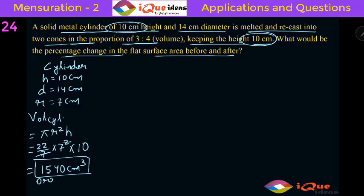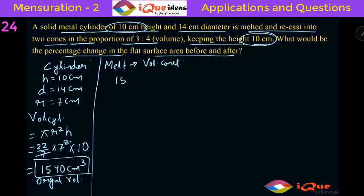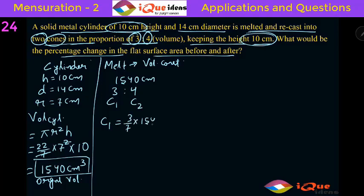This is the total original volume. When we melt and recast, the volume remains constant. So the original volume of 1540 centimeter cube equals the total final volume. In the final case there are two cones with volume ratio 3 is to 4. The volume of the first cone C1 is 3 by 7 into 1540 — 7 cancels 1540 giving 220, and 220 into 3 is 660 centimeter cube.